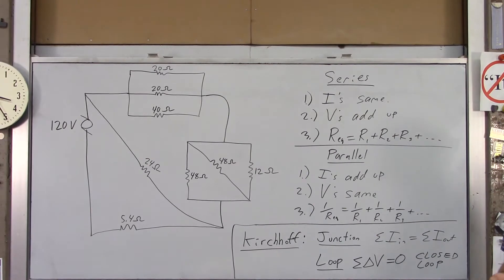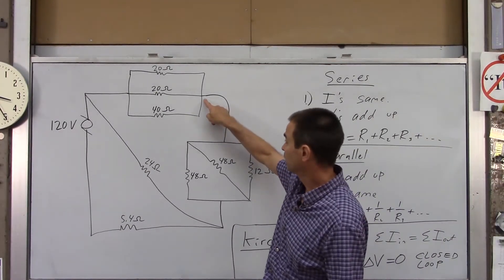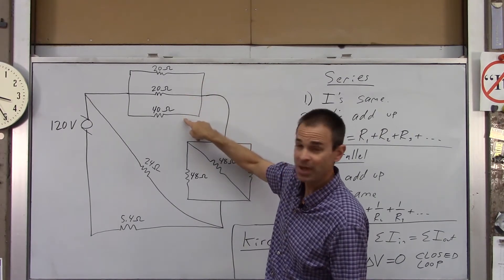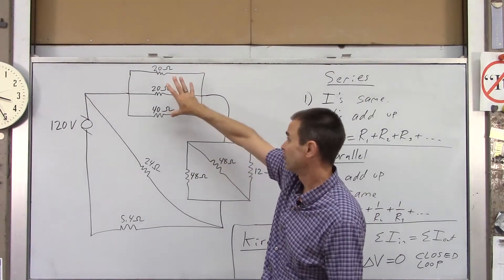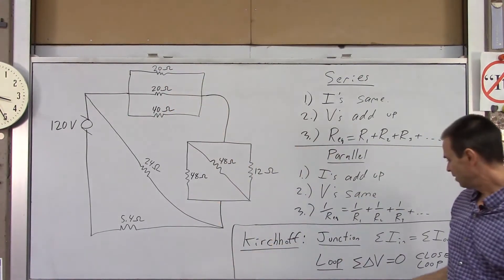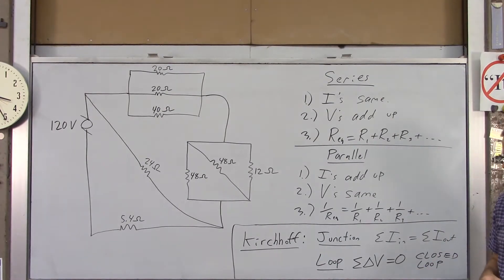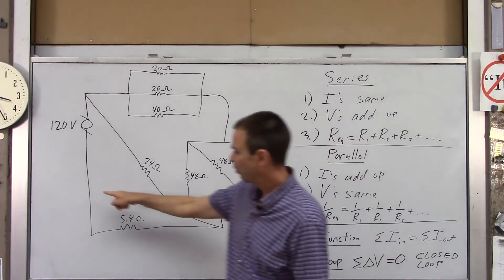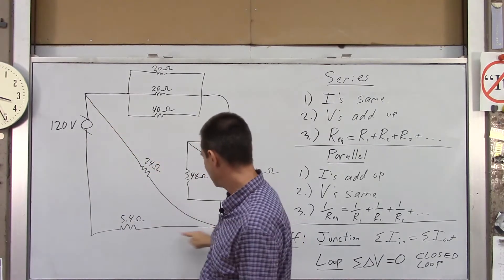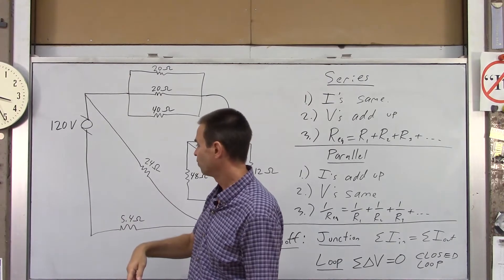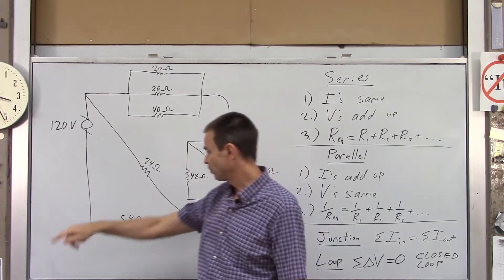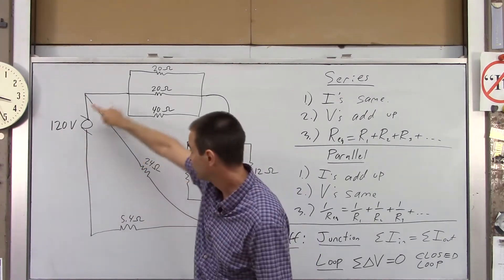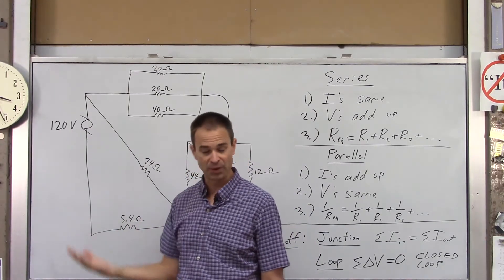Kirchhoff's junction rule states that total current into a junction equals total current out. For example, if currents of one, two, and three amps enter a junction, six amps must exit. Kirchhoff's loop rule states that the total change in voltage around any closed loop is zero. If you pick a starting point and take any path back to it, the voltage gains and drops sum to zero — power supplies give voltage gains, resistors cause voltage drops.